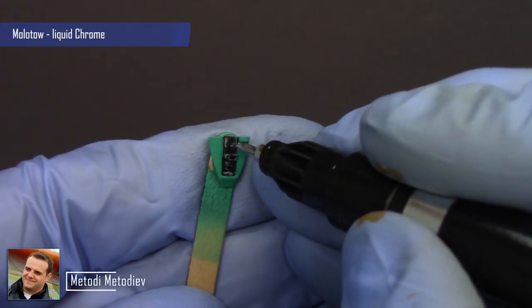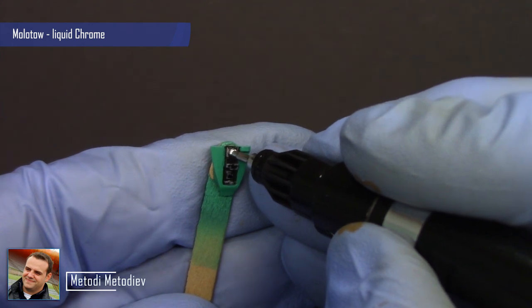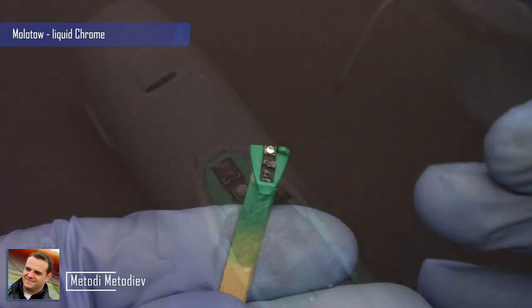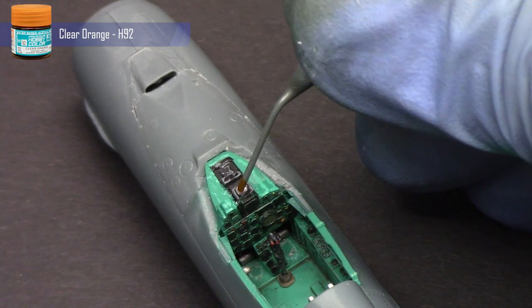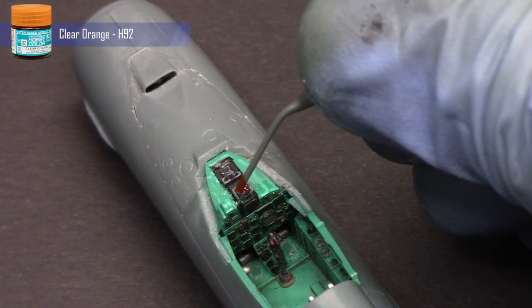First I am going to make an older style heads up display like MiG-21s or similar era aircraft. For the projector, first I apply a layer of Molotov liquid chrome.